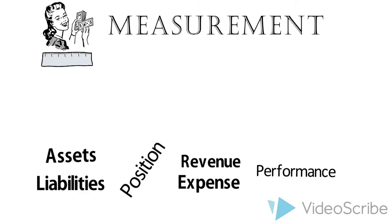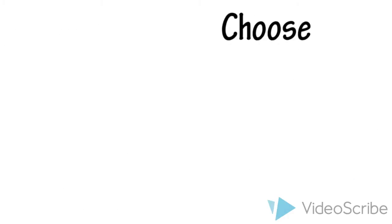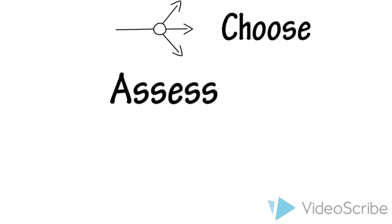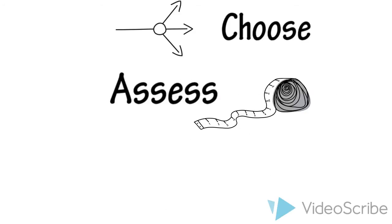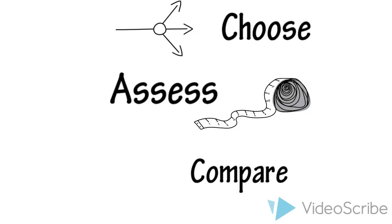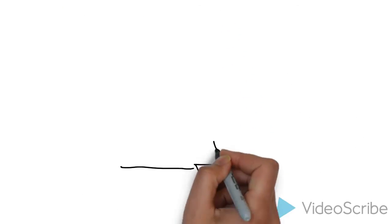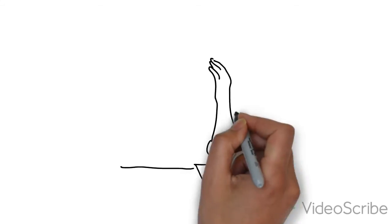So to summarize, measurement is important to make decisions, assess performance and position, and compare performance across time and compare organizations. But it's not straightforward. There are a number of different methods that we might use to measure different attributes of assets and liabilities.